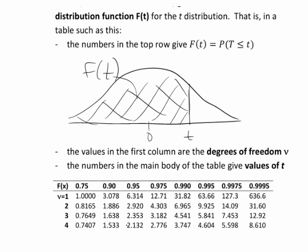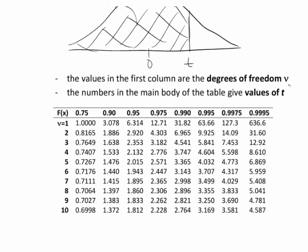The next thing to note is the values in the first column of the table I'm about to show you are the degrees of freedom nu, which is the sample size minus 1. And the numbers in the main body of the table then give values of T. So this is not a complete inverse T distribution table. I've just shown you the first 10 rows of the main body of that so that you can get an idea how this is set out.